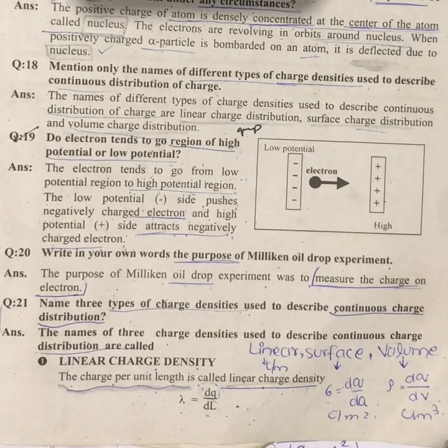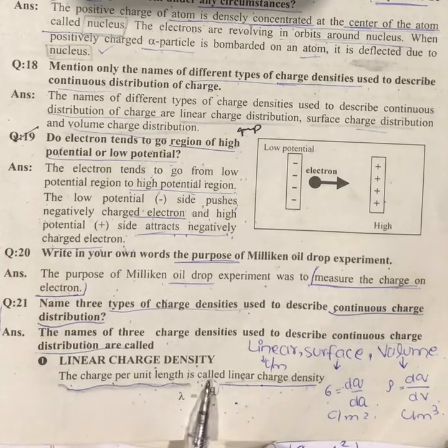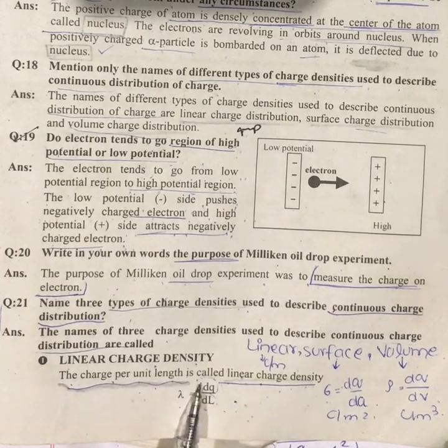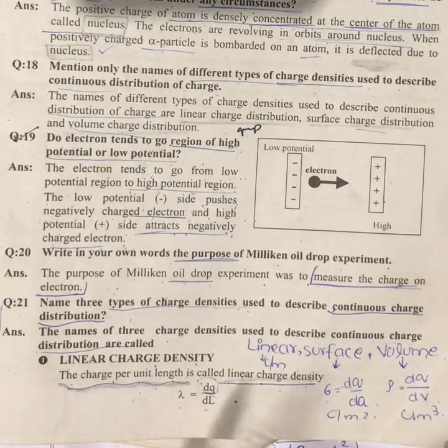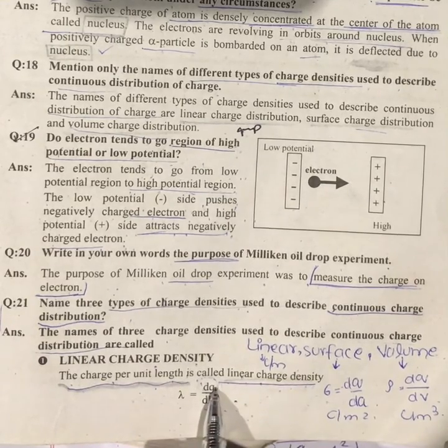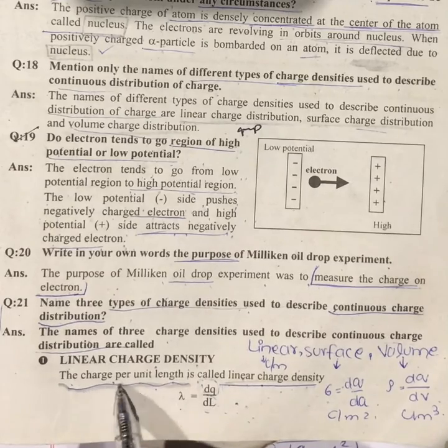The difference between linear charge density, surface charge density, and volume charge density: Linear charge density - the charge per unit length is called linear charge density. Lambda equals dq over dl, that is charge per unit length.